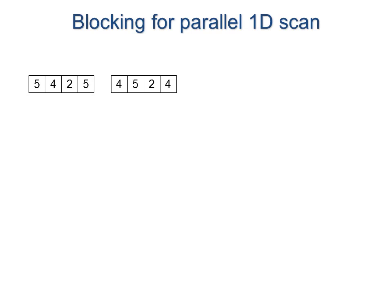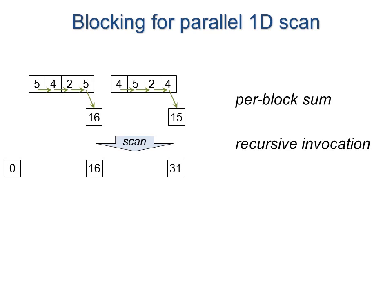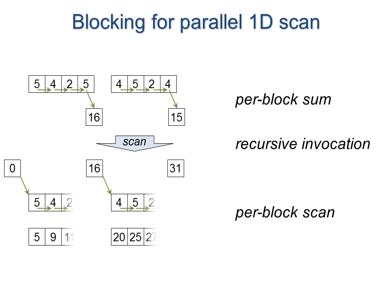A blocking strategy provides more parallelism in each 1D scan. A sum is computed per block in parallel. The algorithm is then invoked recursively on the smaller sequence. Often, the intermediate sequence is short enough that a sequential scan is sufficiently fast.